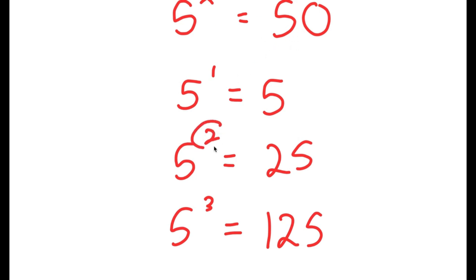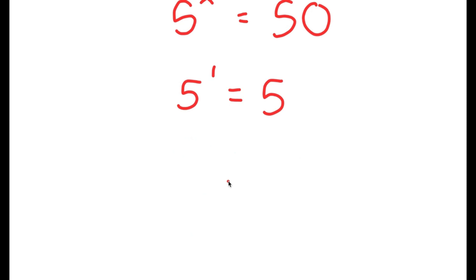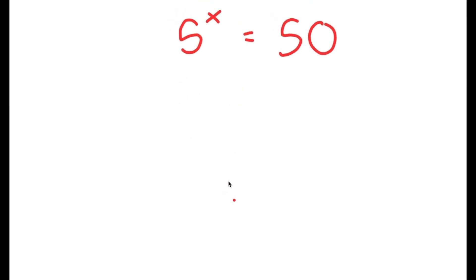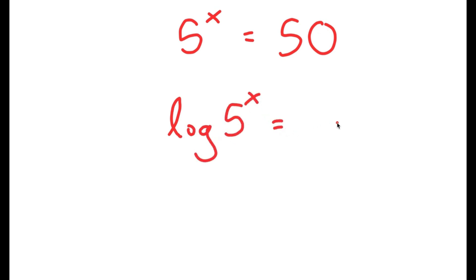So we know that the value of x is going to be somewhere in between 2 and 3, meaning it's going to be a decimal. To find the exact value of x, we're going to be using logarithms.